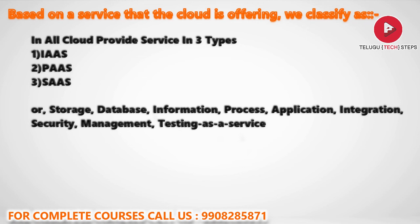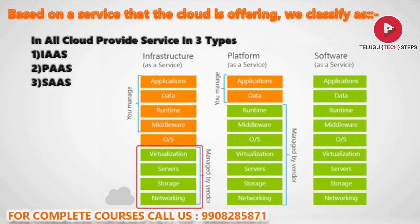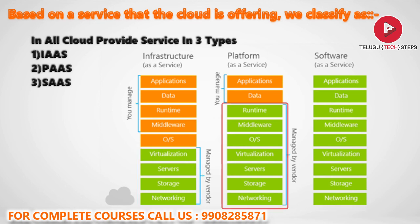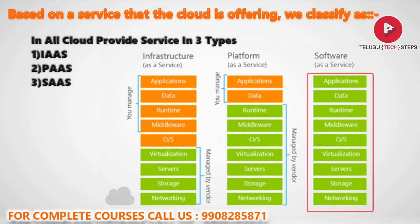Let me explain these one by one. First, Infrastructure as a Service (IaaS). Second, Platform as a Service (PaaS). And third, Software as a Service (SaaS). In IaaS, the vendor — which is AWS, Google, or Azure — manages virtualization, networking, and storage, while you manage the operating system, middleware, runtime, data, and application. In PaaS, the vendor also manages the operating system and middleware, and you manage the application. In SaaS, the vendor manages everything including the application.